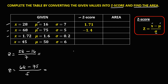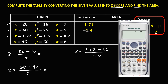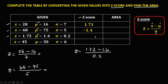For the next given, we have the X value of 1.72, minus the mean of 1.6, over the standard deviation of 0.2. So 1.72 minus 1.6 equals 0.12, then divide by 0.2 equals 0.6. So the Z-score is 0.6.